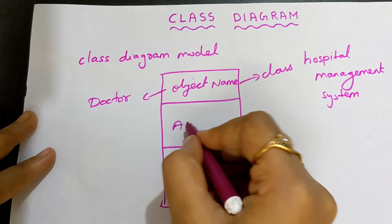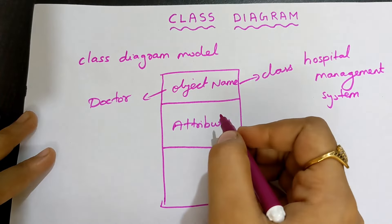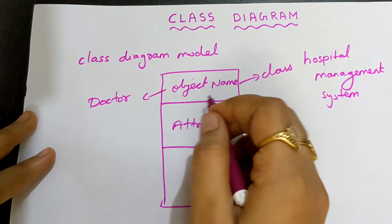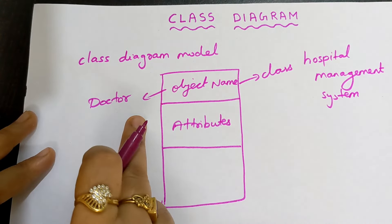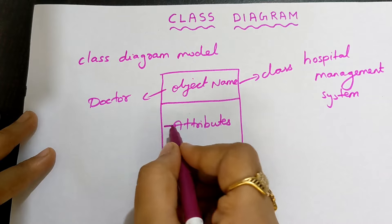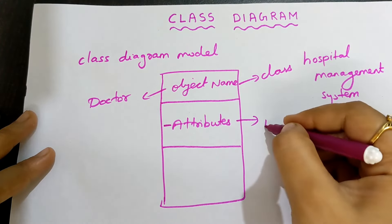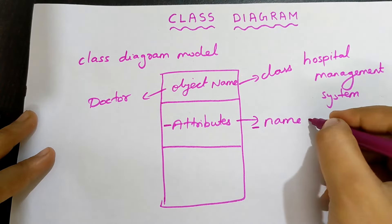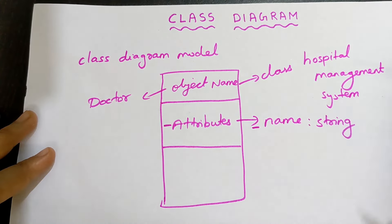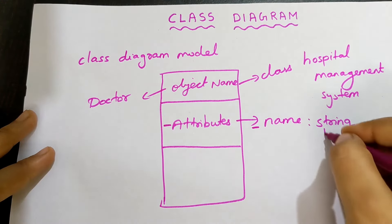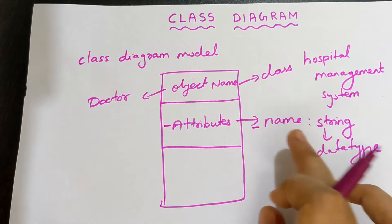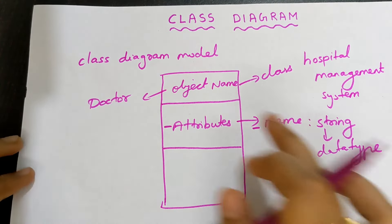Next, attributes is the second part. Attributes is nothing but the characteristics of the object. So what are the characteristics of doctor? All that I have to write inside the second box. I have to put a minus sign before attributes. Doctor will have a name, so I write minus name, colon, then the data type. Name is nothing but a string because it consists of alphabets. So this is about the attributes — put a minus sign and the attribute name corresponding to the object's characteristics.